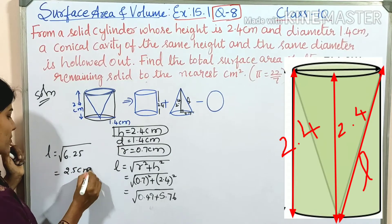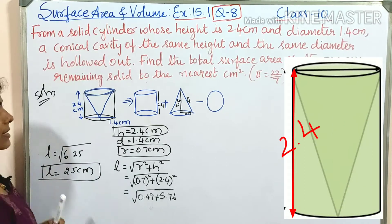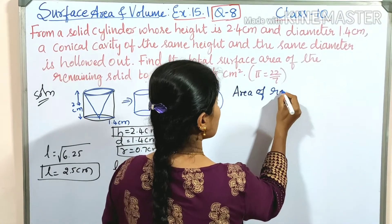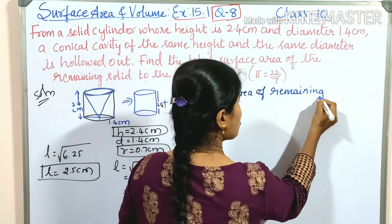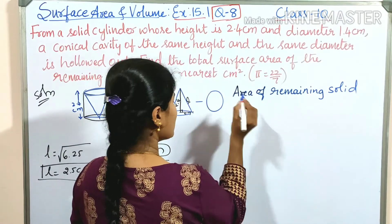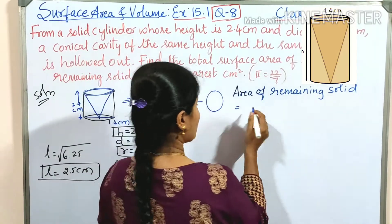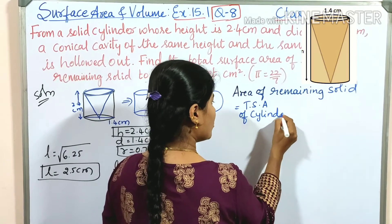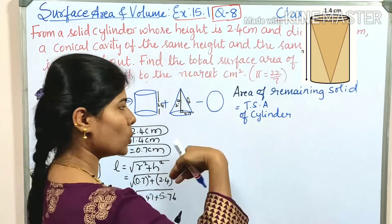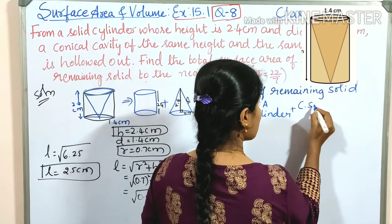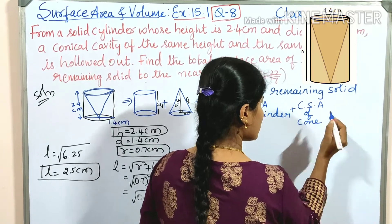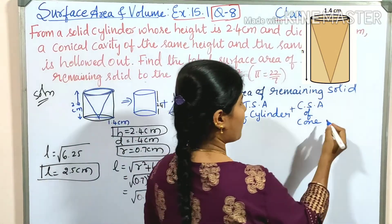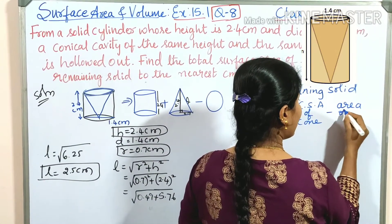Now let us write the formula. Area of remaining solid = TSA of cylinder + CSA of cone − area of circle. We use the full TSA of the cylinder because it is a solid. We add only the curved surface area of the cone since it is a conical cavity that is hollowed out, then subtract the area of one circle.